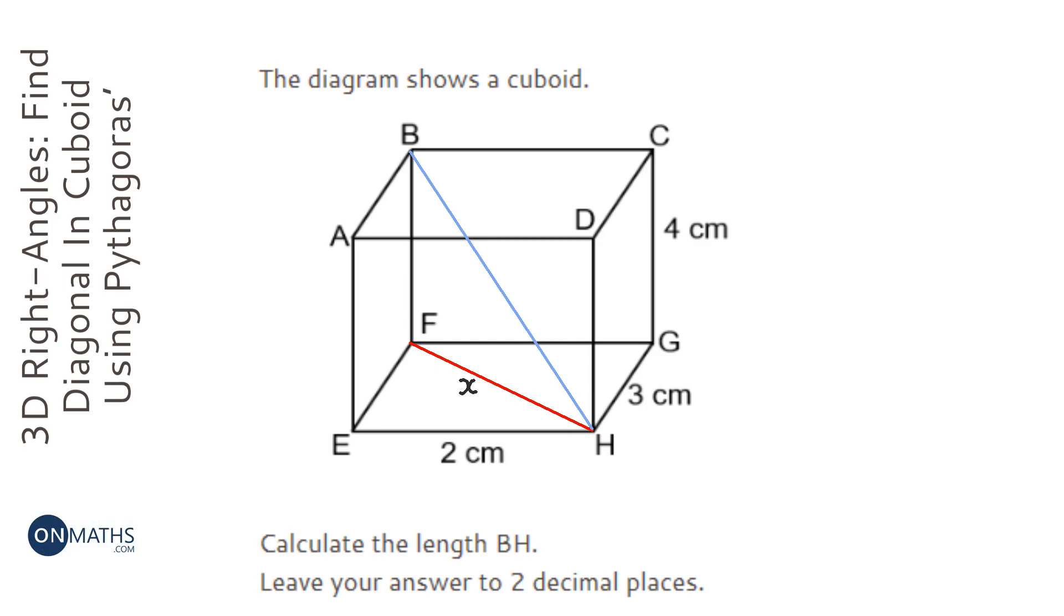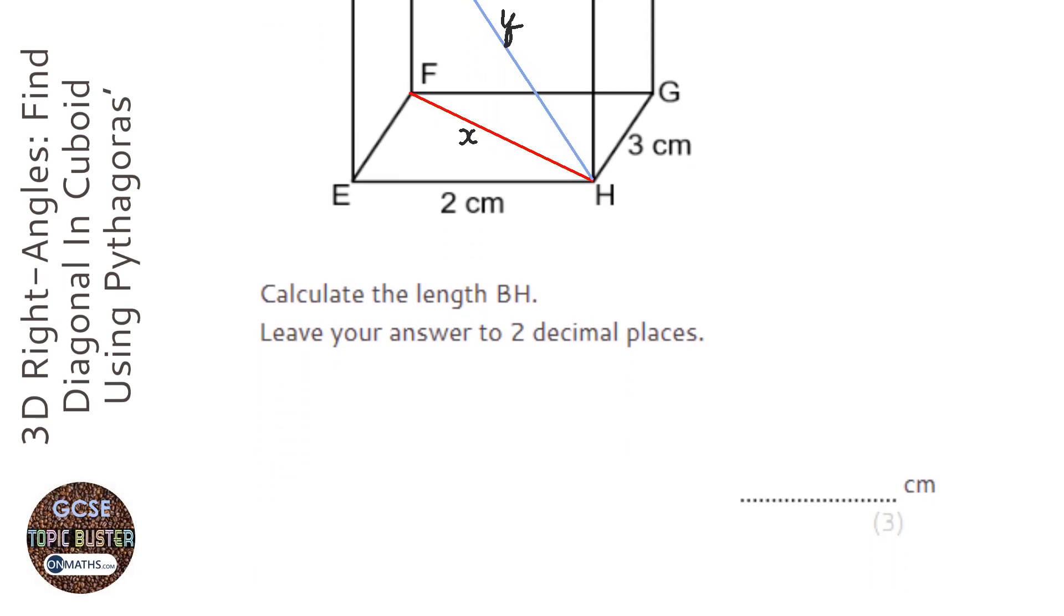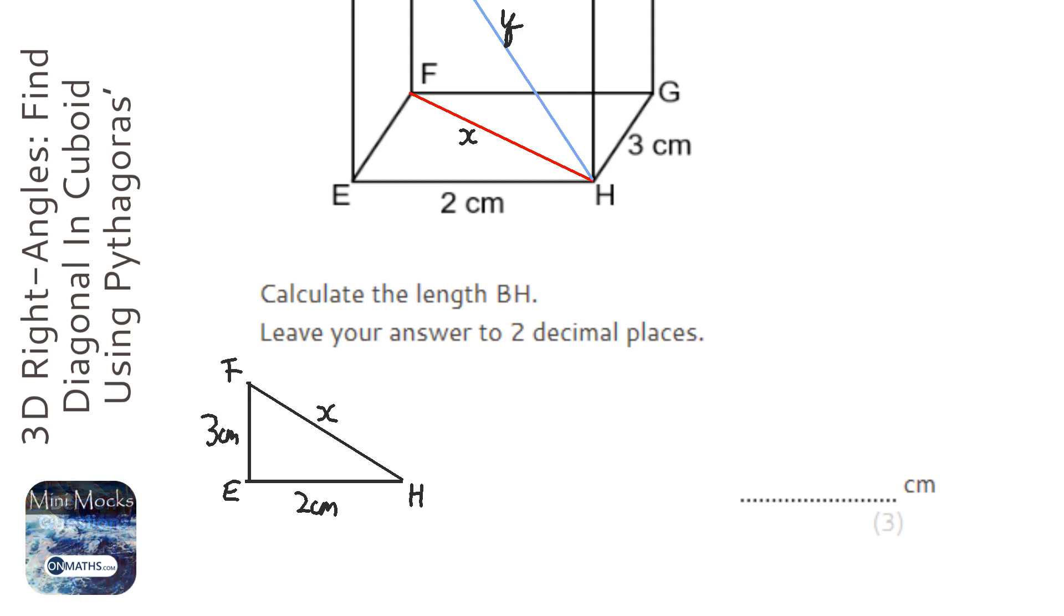I'm going to call the length FH x, and the length BH y. I'm just going to draw out the two right angle triangles that we need for this question. Starting with triangle FEH - this is x, this is 2 centimeters, and this is going to be 3 centimeters because it's the same as on the other side.